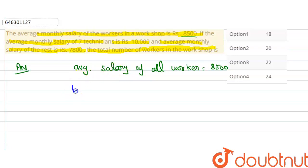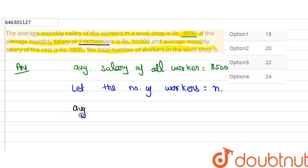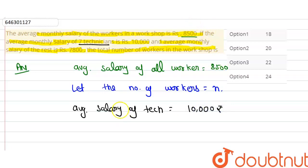तो यहाँ पर हम लोग let कर लेते हैं — let the number of workers be N. तो N workers यहाँ पर काम कर रहे हैं। अब इन N workers में से 7 technician हैं, जिनकी average salary कितनी है? Average salary of technician — वो given है 10,000 rupees, okay? Number of technician that is 7.